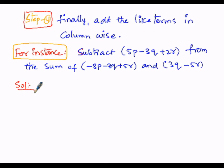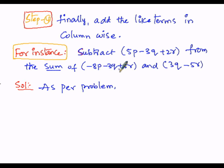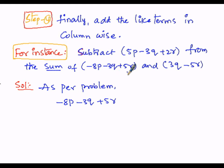As per the problem, we first add the two expressions: −8p − 3q + 5r and 3q − 5r, arranging them in order p, q, r. We write −8p − 3q + 5r, then below it we place 3q (under the q column) and −5r (under the r column), since p is missing in the second expression.